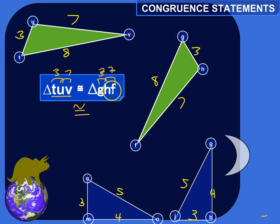So the order that you write the points that define the triangle matters. So let's try one. Let's write a congruent statement for these two triangles. These two triangles are congruent. They have congruent corresponding sides and congruent corresponding angles.